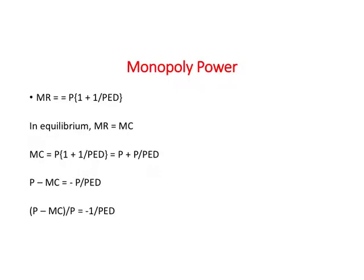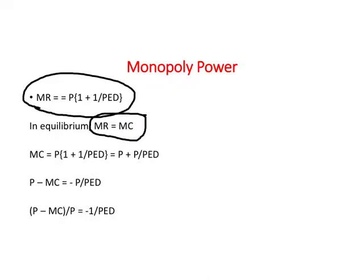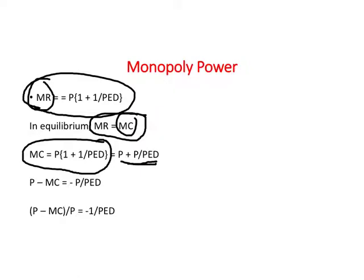The extent to which price is greater than marginal cost reflects the monopoly power of the single seller. Using the relationship between marginal revenue and price, and knowing that in equilibrium MR equals MC, we can substitute MC for MR. Opening the parentheses and rearranging — bringing MC to one side and the price elasticity term to the other — we derive the final expression.